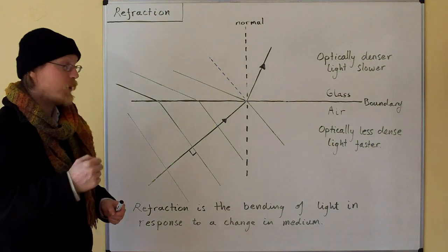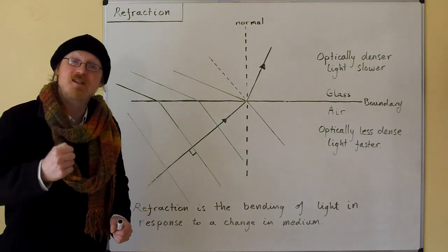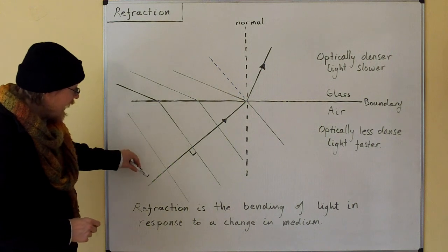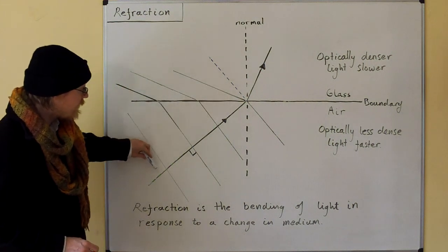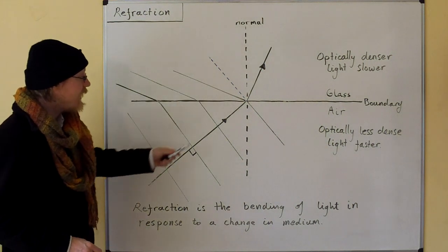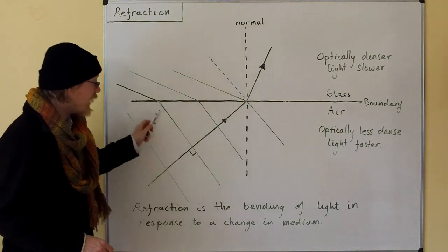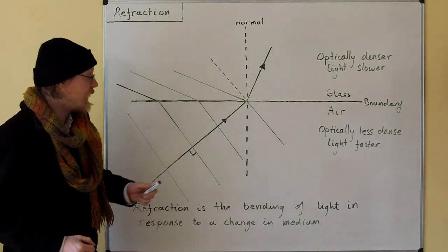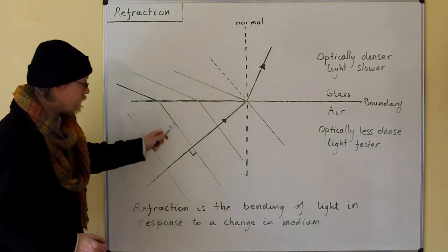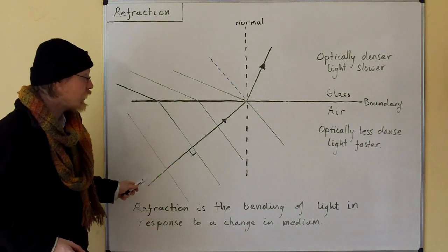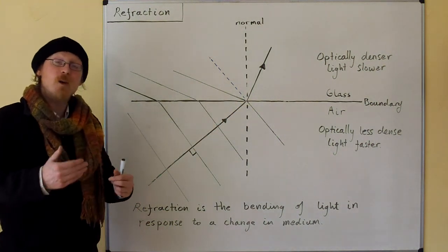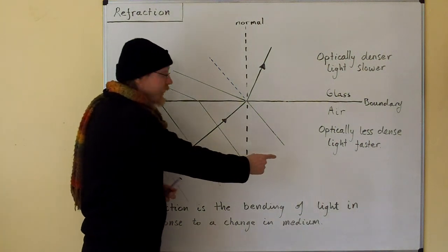So we're looking at what happens to light as it slows down. Here is our wave direction, and here are the wave fronts of the light. We've magnified this picture so we can see the wave fronts at right angles to the wave direction.